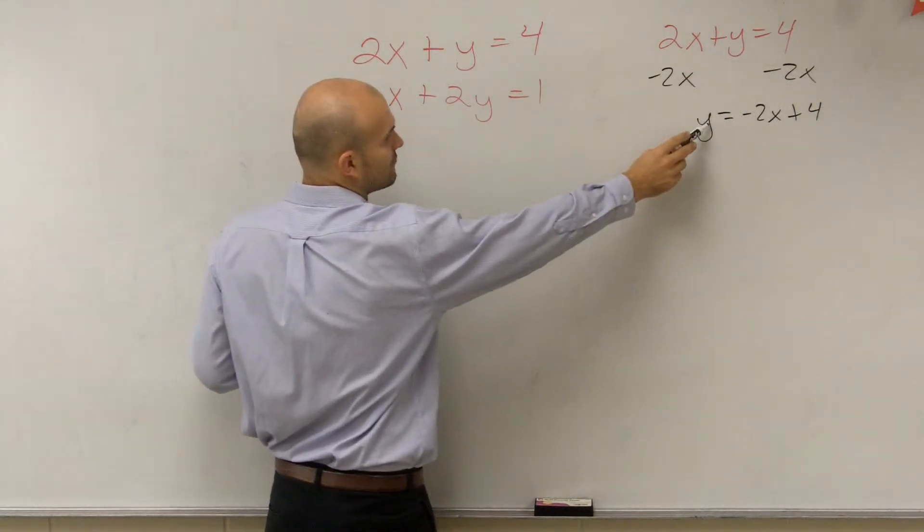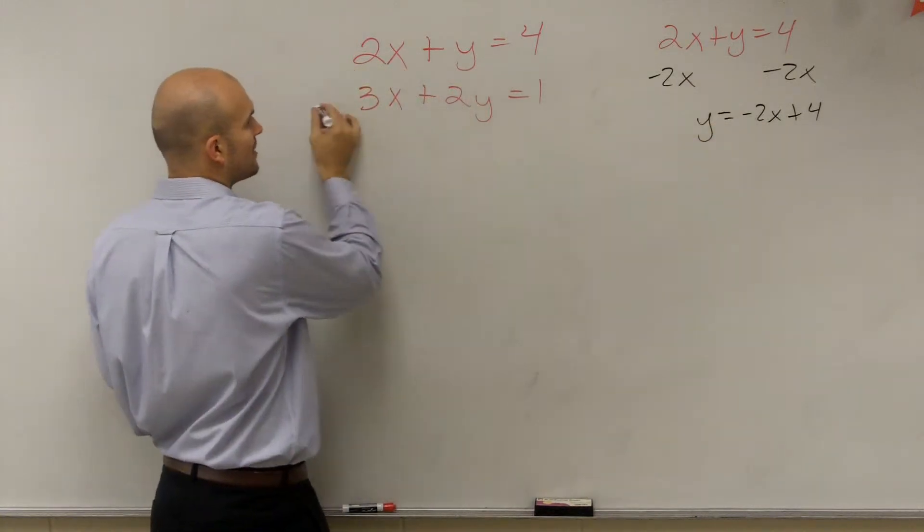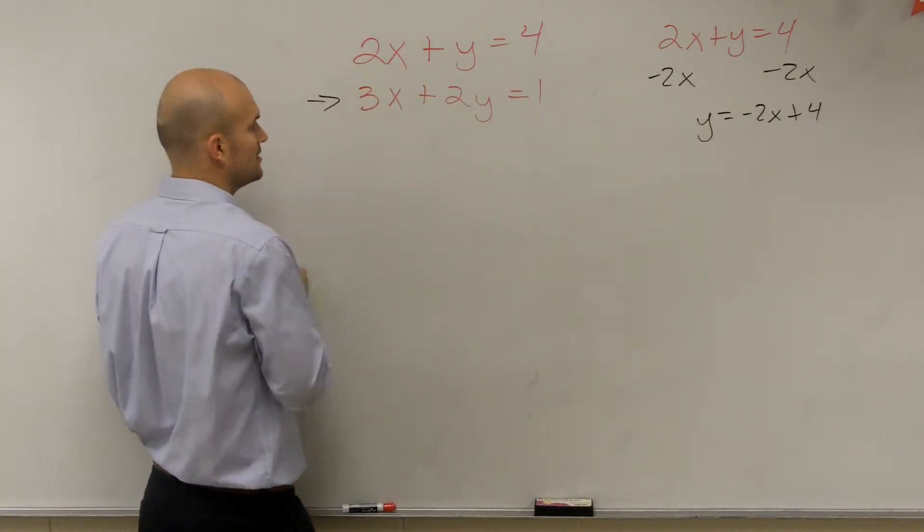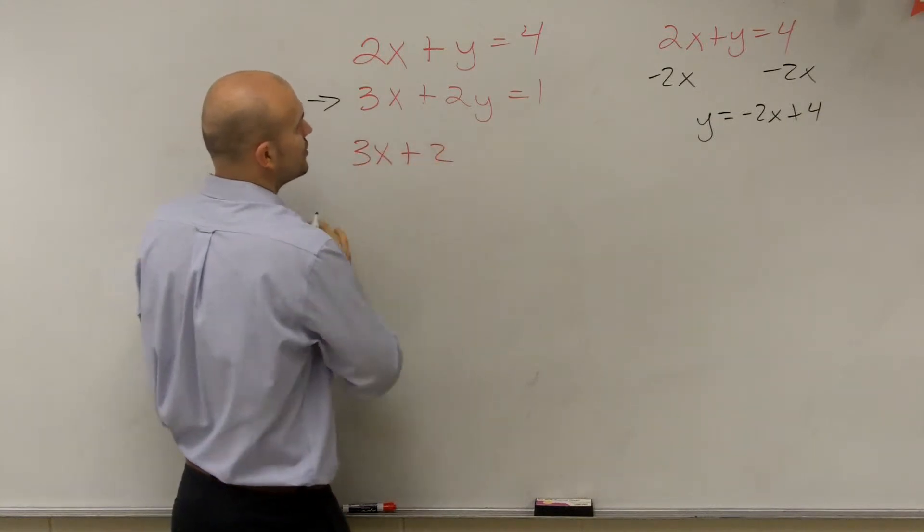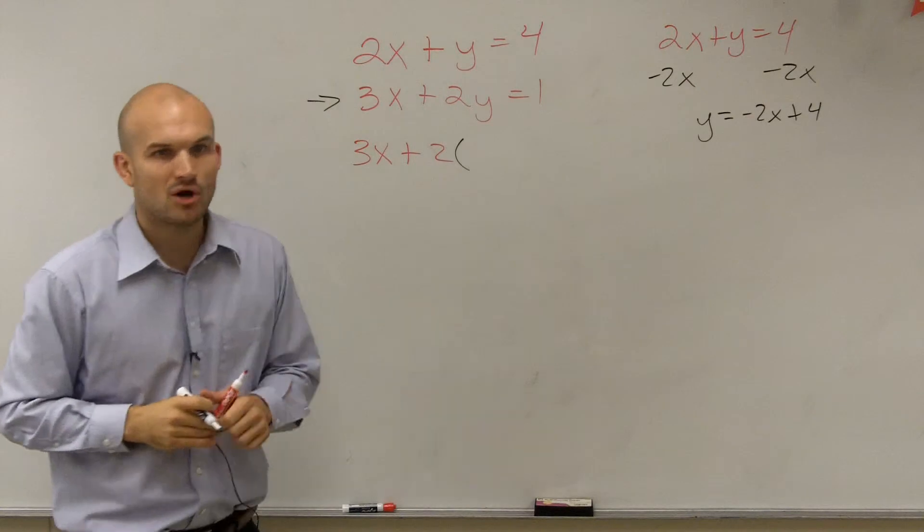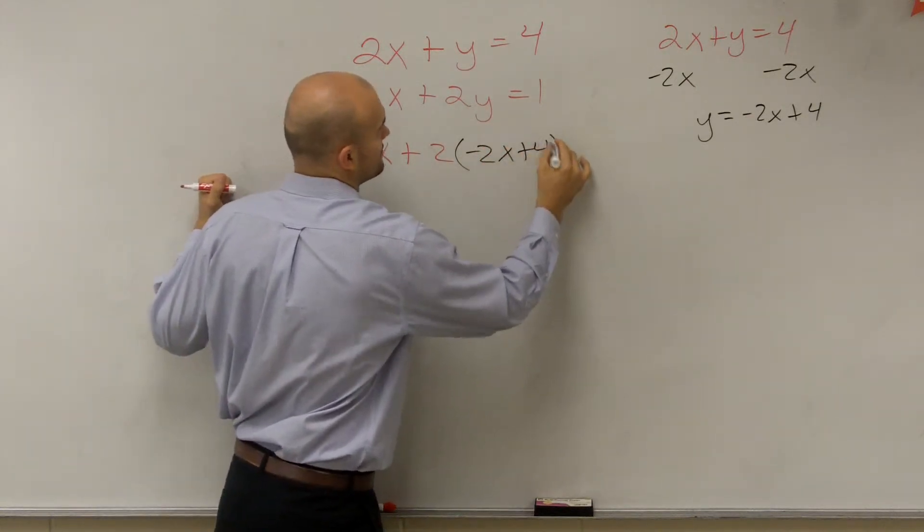That's why we call it the substitution method, because what you're doing is you're substituting one value in for the other. So what I'm going to do is take y, and I'm going to substitute in for y negative 2x plus 4. But I'm going to do that in my second equation.